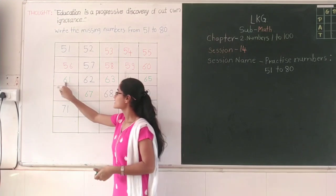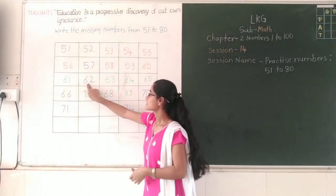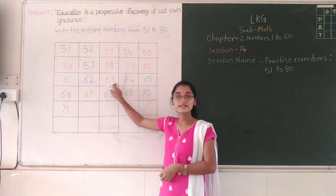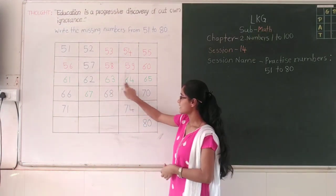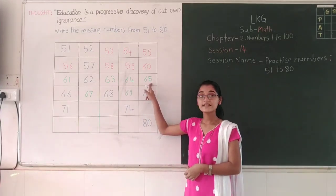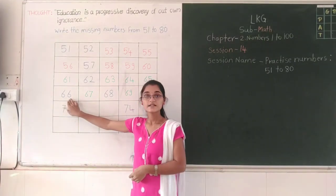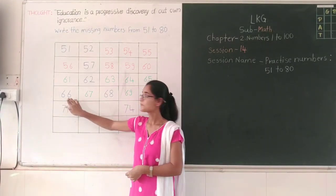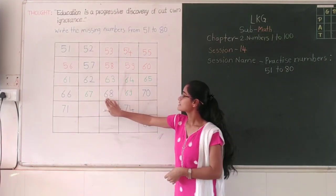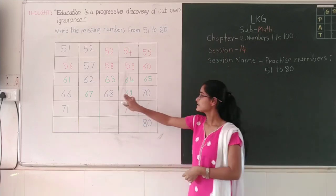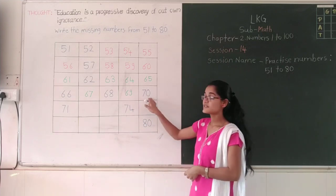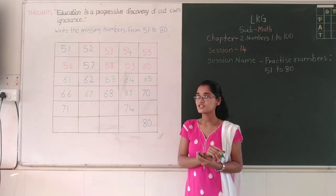You get here: 61, 62, 63, 64, 65, 66, 67, 68, 69, 70. Okay?